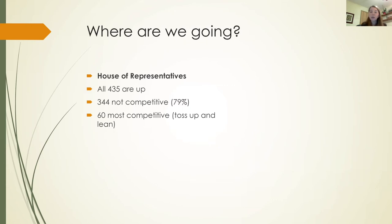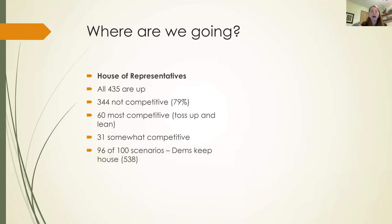There are about 60 of the most competitive seats: 26 toss-up seats and others that lean toward one party or another. There are another 31 seats that are somewhat competitive, typically labeled likely Democratic or likely Republican. Current examinations from 538, running simulations, show that in 96 of 100 scenarios, the Democrats will keep the House — a pretty high likelihood.